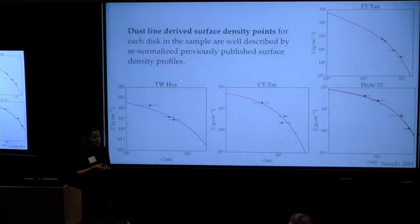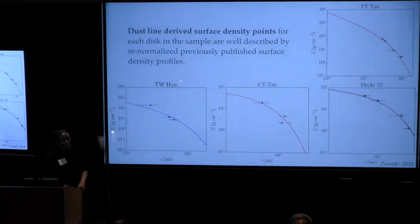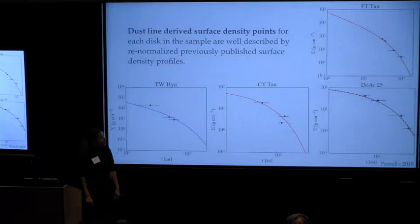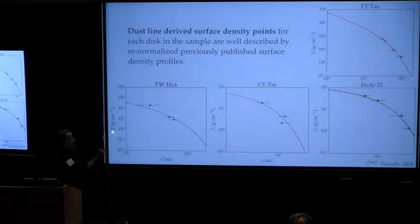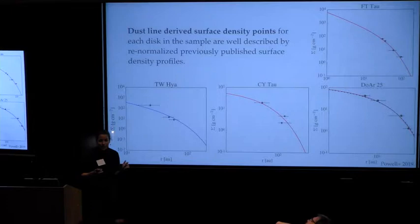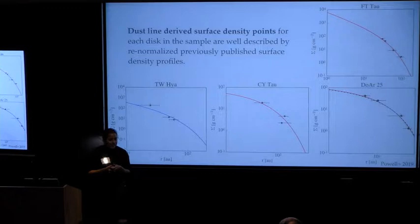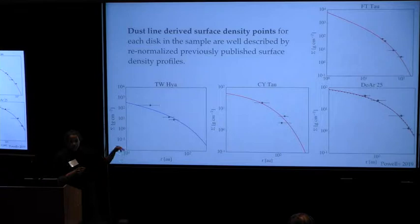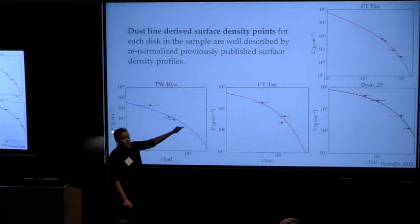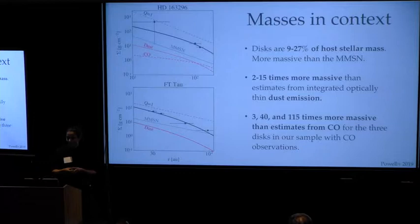So now I'm showing the total gaseous surface densities that we derive from dust lines. The black points here are for four of the seven disks in our sample. The black points with errors are the dust line derived surface densities. What we've done here is scale observations, so blue is CO observations and red is combined multi-wavelength observations of dust where they have derived a surface density profile for these objects. In the future, if we had many points, you can imagine fitting a surface brightness profile directly with those points themselves. But for now, we find that the points are actually well fit by rescaling these previously derived profiles.